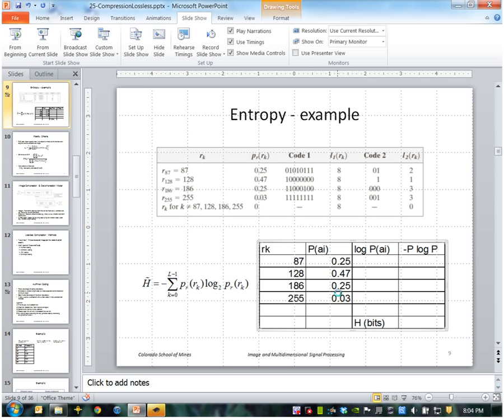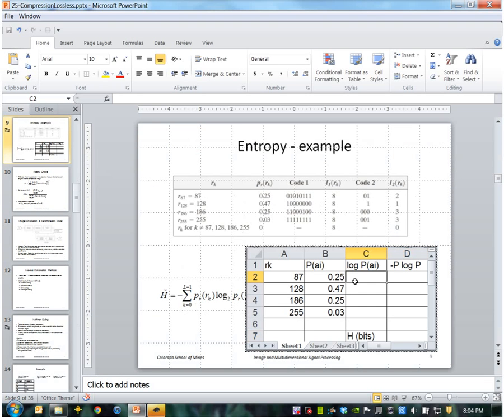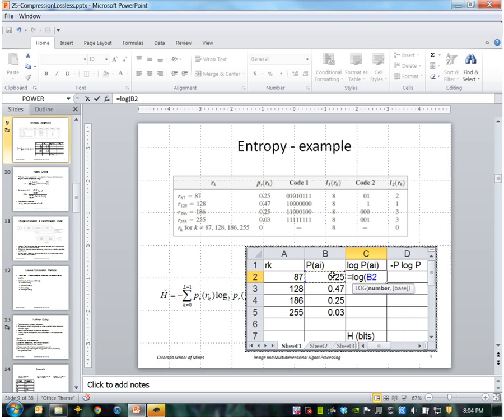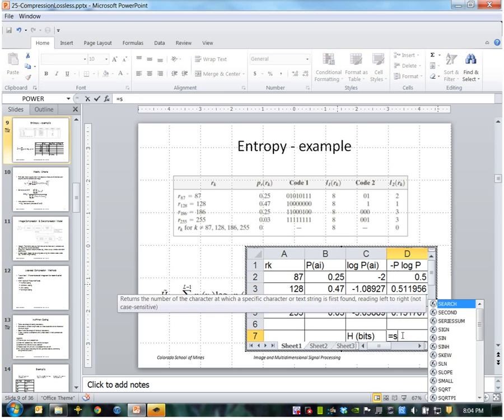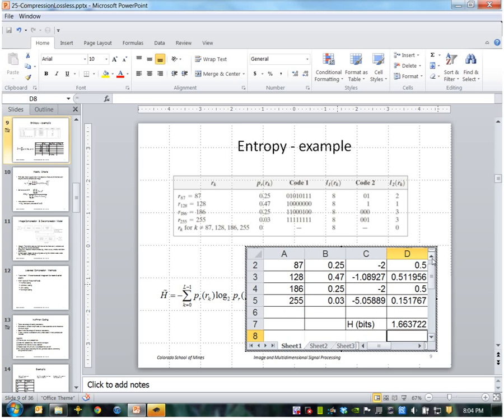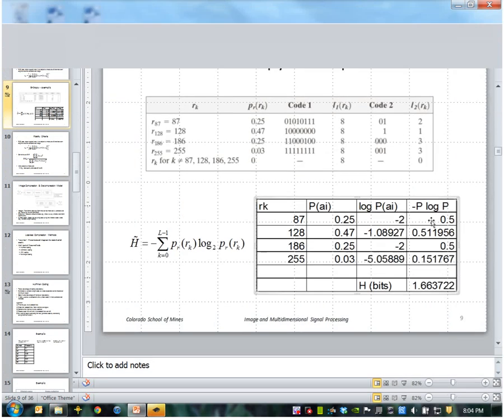So in Excel you can do this using the Excel function log and then the number will be that and base 2 will be that. So I simply copy and paste those and then here I'm going to multiply negative times the probability times the log of the probability. So I get that and I'll copy and paste that. And finally I'll sum up this last column using the sum function and I get 1.66 bits here.